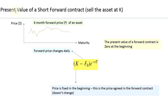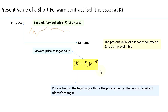Now, if you want to calculate the present value of a short forward contract — remember, a short forward contract means we are planning to sell the asset in the future at price K — the formula is almost the same, but now it is K minus the forward price. It is K minus F because when we are selling we will receive money, so it is K minus F, and then you multiply by the exponent of minus the risk-free interest rate times time to maturity.